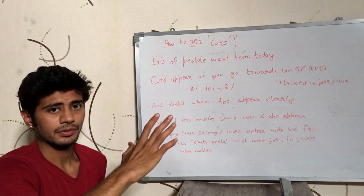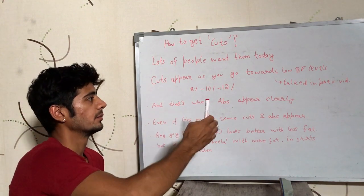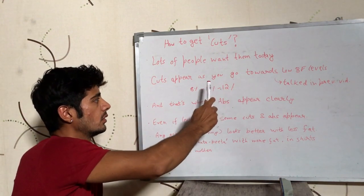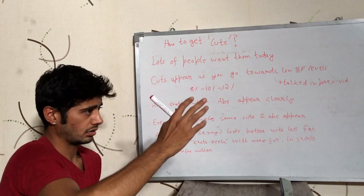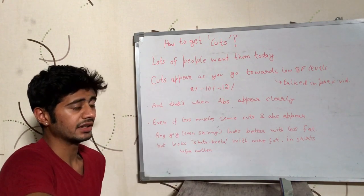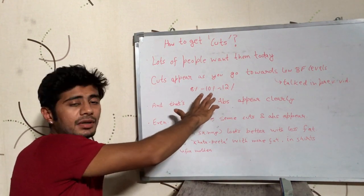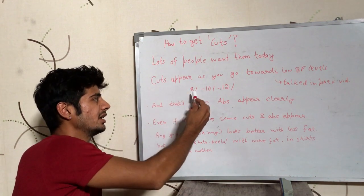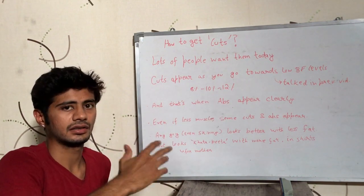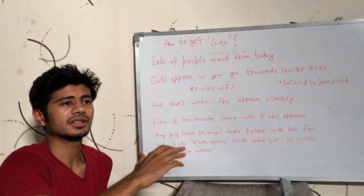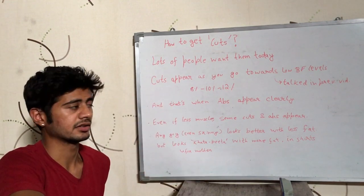They are the shape of the muscle — that is what you call cuts. Typically, you will see decent looking cuts at around 10% body fat. For some people it can be 8%, for others it can be 12%, but around 10% body fat you will see what you call cuts.